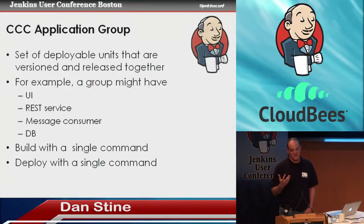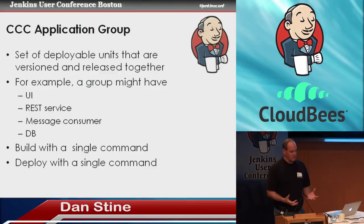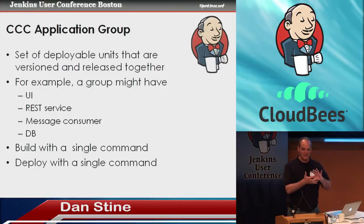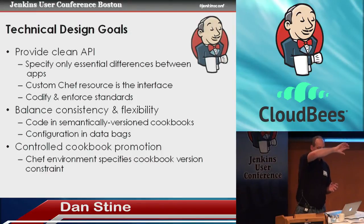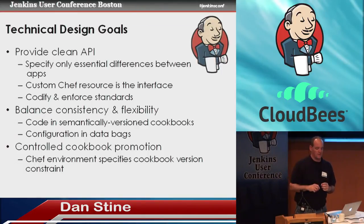We talk about deploying 'applications,' but we use that term to mean different things. We might really mean a system — like an order management system — that has multiple individual applications comprising it. So we defined the term 'application group.' An application is an individual single deployable unit — the UI, a REST service. A group is these things grouped together, versioned and released all together, built with a single command. The framework we built allows us to deploy it with a single command as well. We needed a clean, tight, narrow API for application groups to consume the framework.